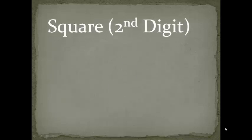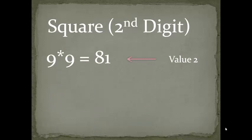For the next part of our answer, we will square the 2nd digit of the number. So in our case it is 9 into 9 is equal to 81. We will call it as value 2.